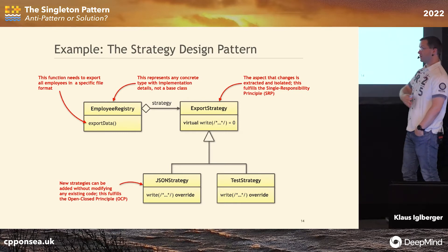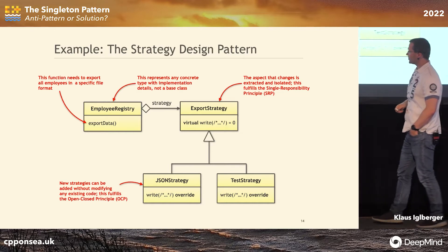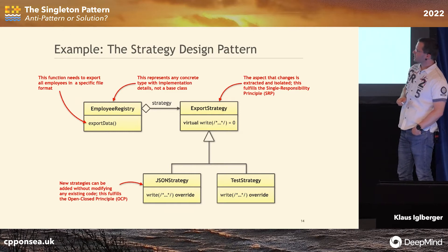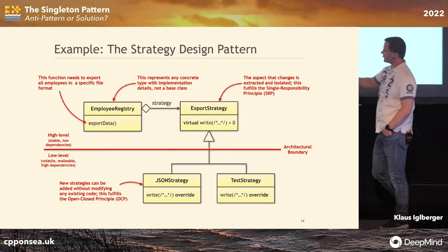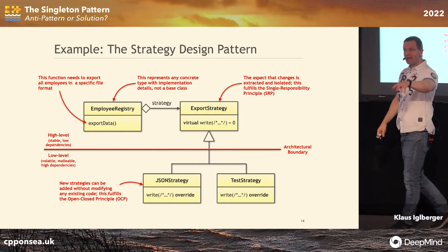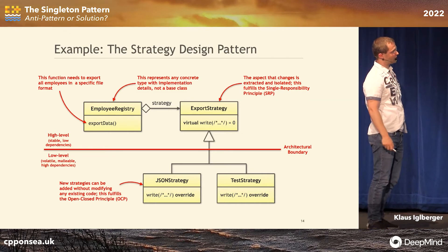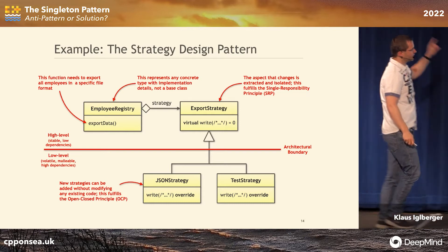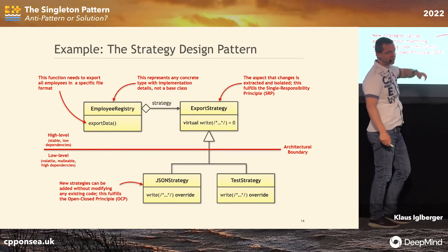EmployeeRegistry doesn't have to know about the details. The fact that we can implement strategies freely is the open-close principle — we don't have to touch existing code, just introduce a new strategy. But why is this a design pattern? Because I can draw a line — a line that separates the using code from the details. I can draw what you'd call an architectural boundary. That is the decisive thing about a design pattern: you can separate things and customize one side while the other is totally unaffected.